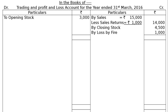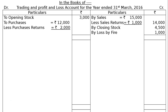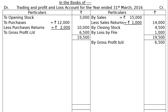On the debit side of the Trading Account: To Opening Stock Rs. 3,000; To Purchases Rs. 12,000, less Purchases Return Rs. 2,000, giving Rs. 10,000 in the final column. The credit side totals Rs. 19,500. Writing that in the debit side and finding the difference gives Gross Profit carried down of Rs. 6,500. In the Profit and Loss Account, write By Gross Profit brought down, Rs. 6,500.